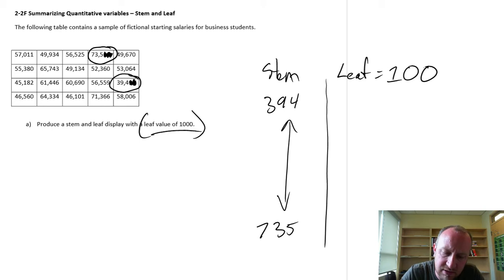So if I go leaf value of a hundred, okay now we're scaling it further, ignore those rightmost three values, and now my stems range from 39 to 73, I don't know where 45 came from in my brain. So we still have here a couple of dozen stems.